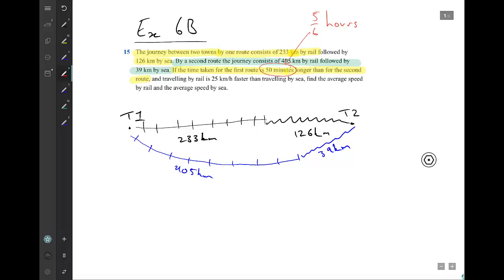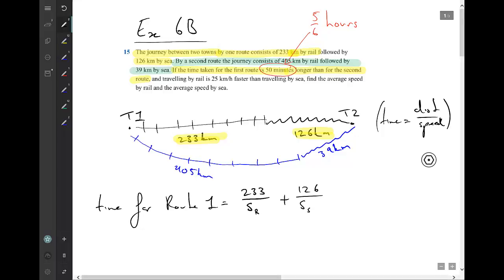So what we know is that we can write down time for route 1. And we can write that down simply using the idea that the time is equal to the distance divided by the speed. So we have a distance of 233 kilometers divided by however fast it's going over that rail portion, plus 126 divided by the speed over the sea portion.